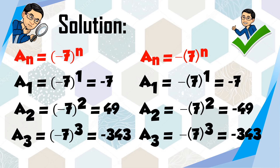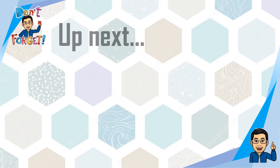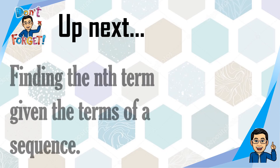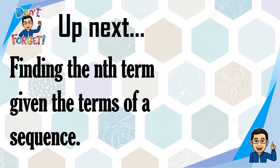I hope you learned from this video about finding the terms of a sequence given the explicit formula. Up next: finding the n-th term given the terms of a sequence. Previously we were given the formula; in the next video, we will find the formula given the terms. Make sure you've watched the previous video so you won't be confused. Thank you, and don't forget to share, like, and subscribe.